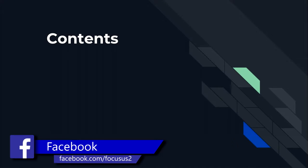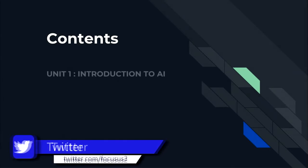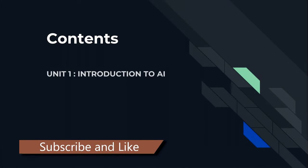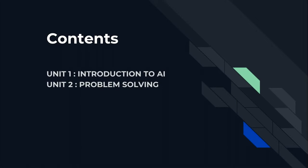I have divided it into 7 different units so that it will be easier for you guys. In unit 1 we will see introduction to AI — it basically covers what is AI, why it is important, and so on. In unit 2 we will be seeing problem solving, which involves what is a problem, what are the types of problem, problem formulation, and so on.